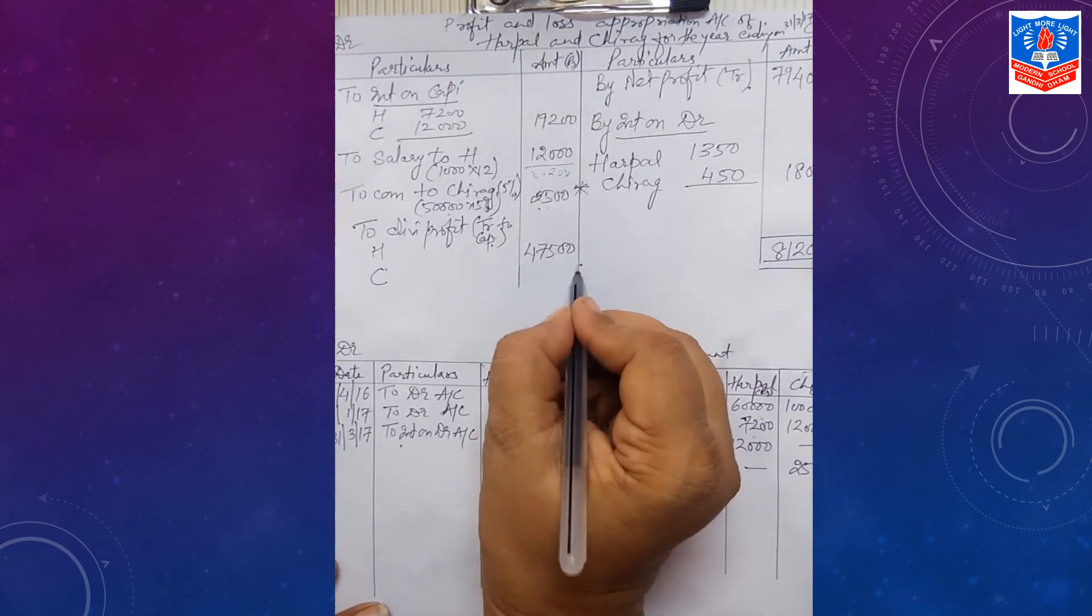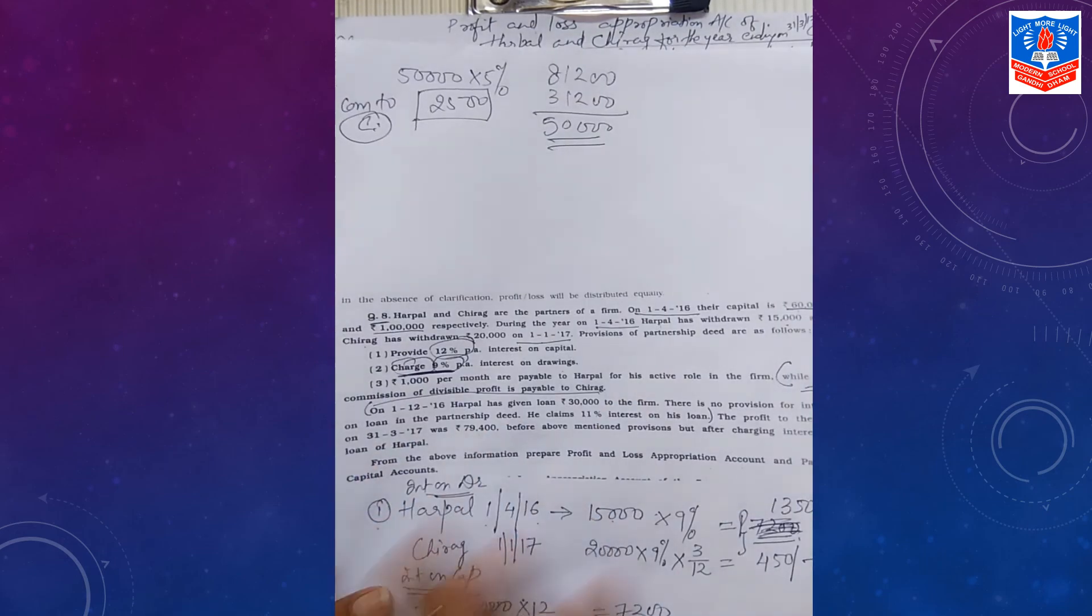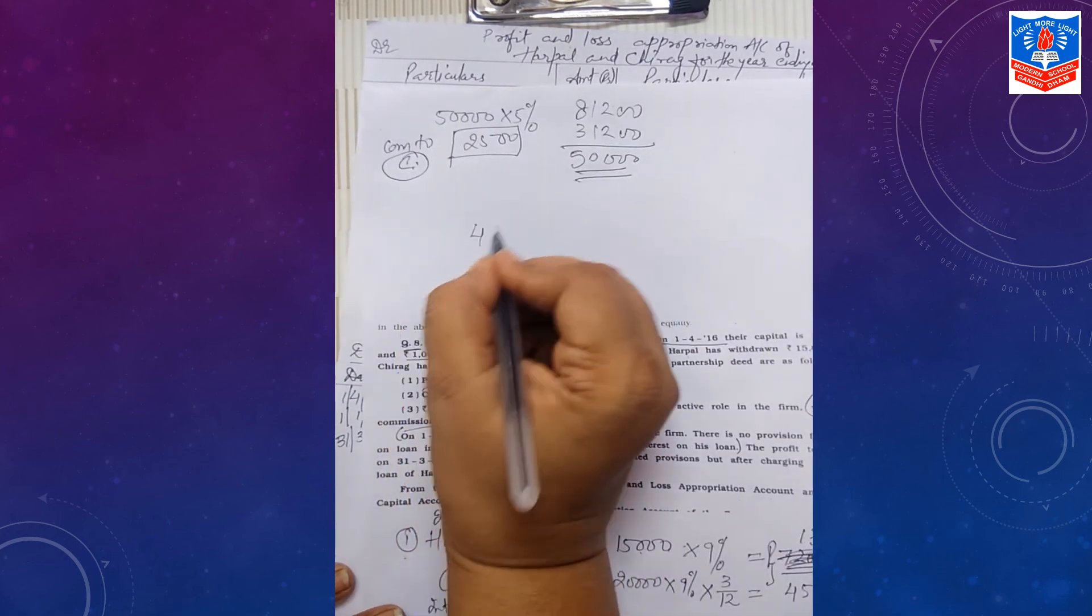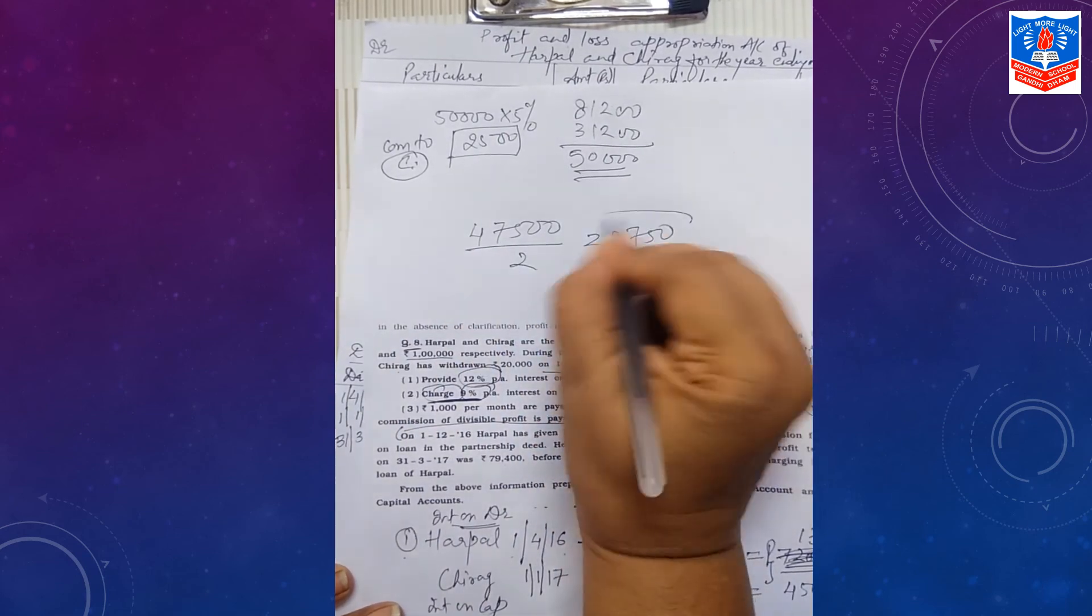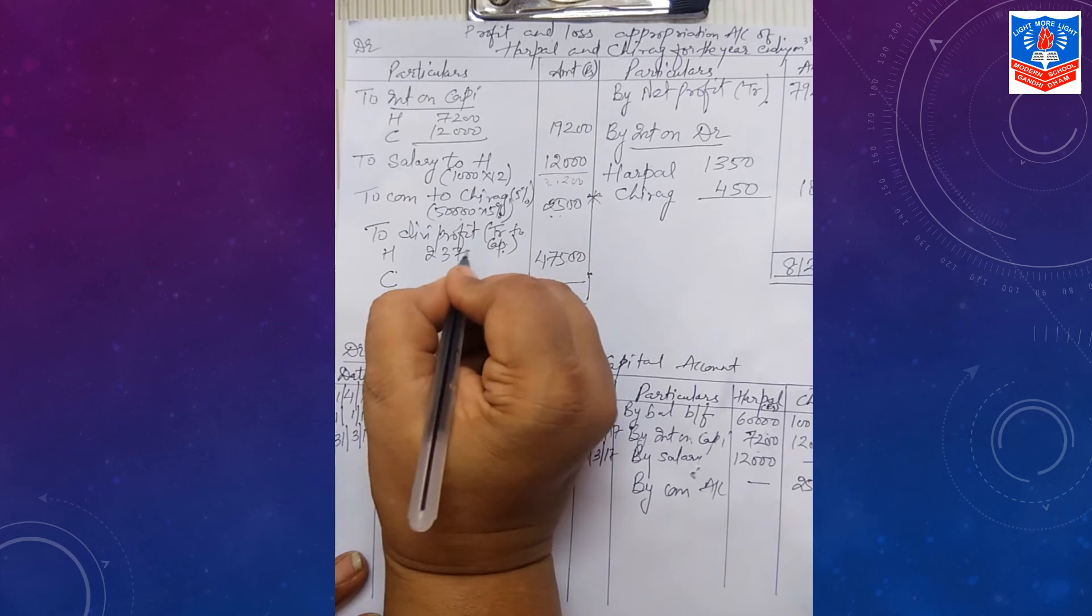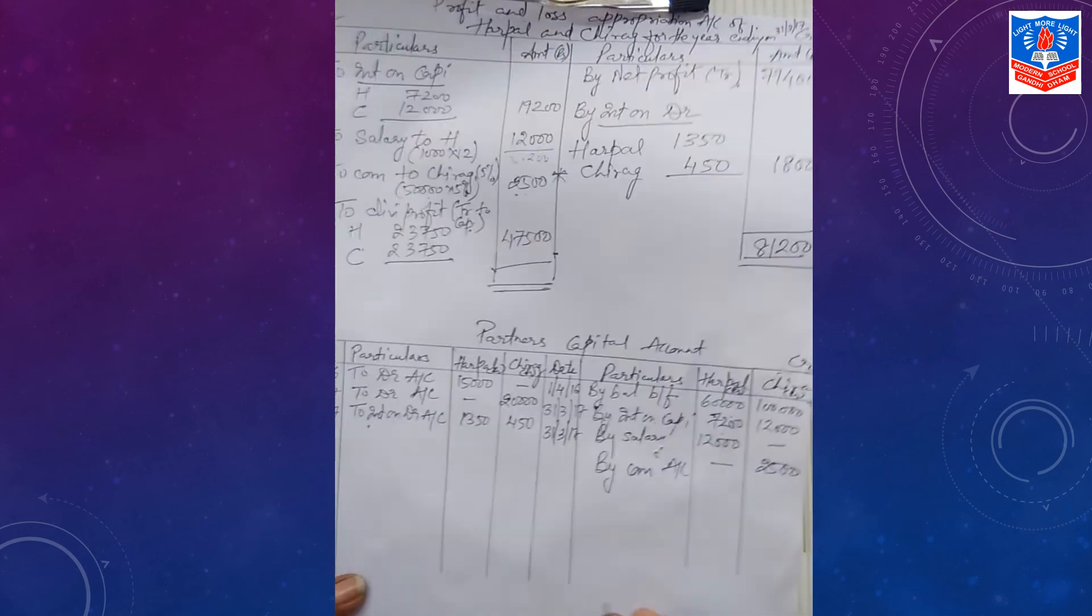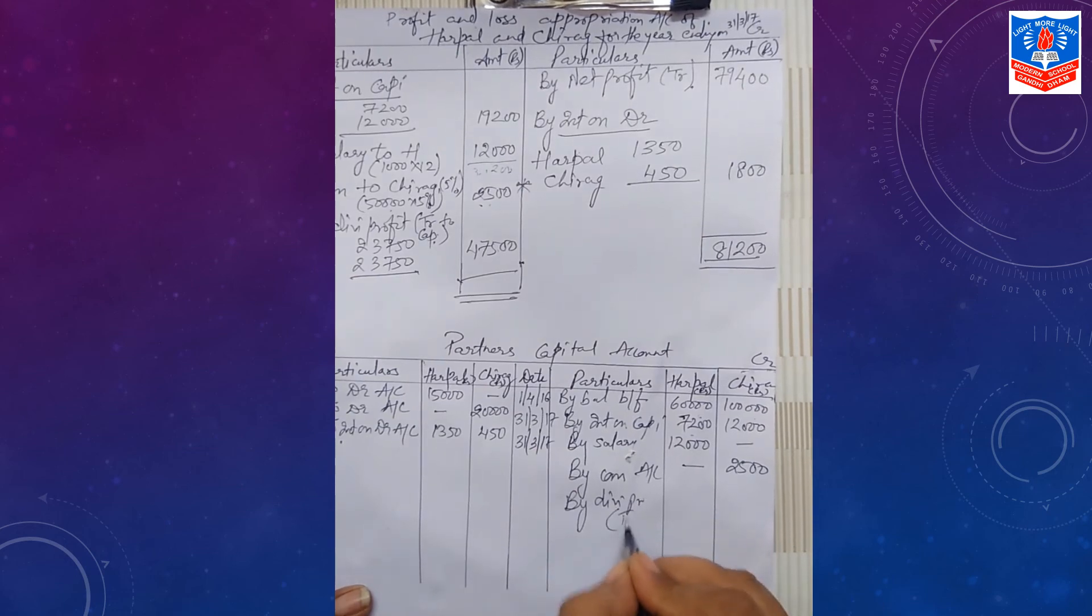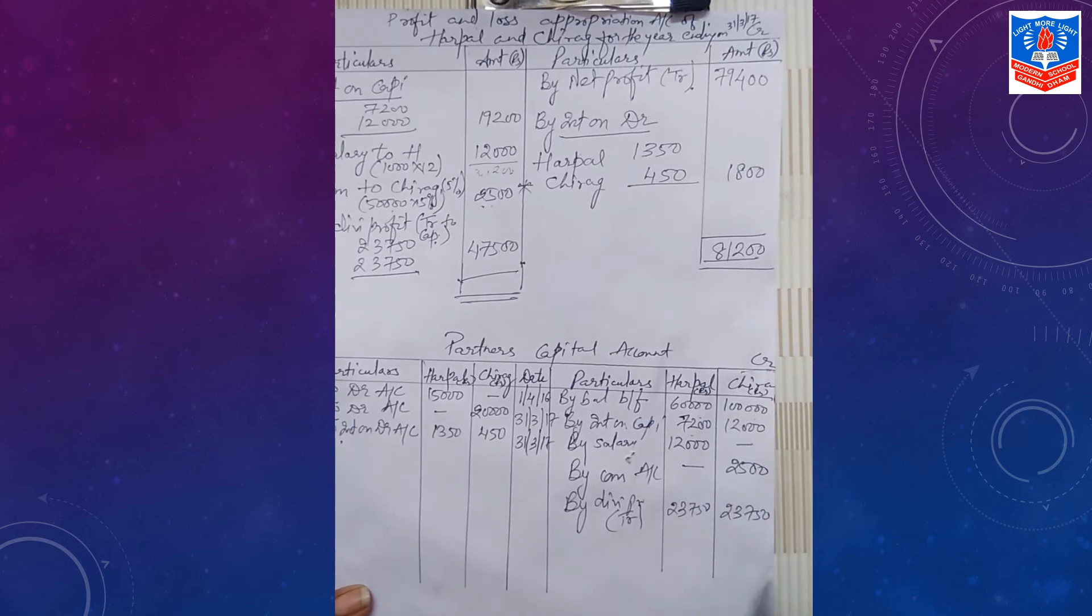Carefully, now divisible profit has to be divided in P&L ratio. Here in this question P&L ratio is not given. So automatically provision says profit will be distributed equally among the partners. So here if we divide by 2, each partner gets how much? Rs. 23,750. Let us give them Rs. 23,750. Transfer this to partners capital account. By divisible profit, in bracket write transfer: Rs. 23,750, Rs. 23,750.